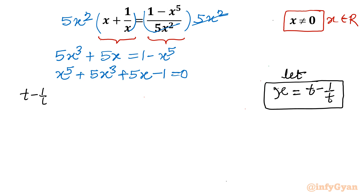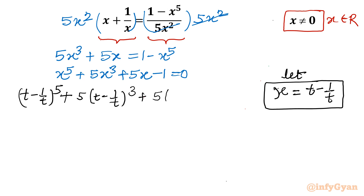Substituting x = t − 1/t into the equation: (t − 1/t)⁵ plus 5 times (t − 1/t)³ plus 5 times (t − 1/t) minus 1 equals 0. We need to expand all three terms. The last three terms are not a constraint — only the fifth-power term is a problem, so we will handle that one separately.